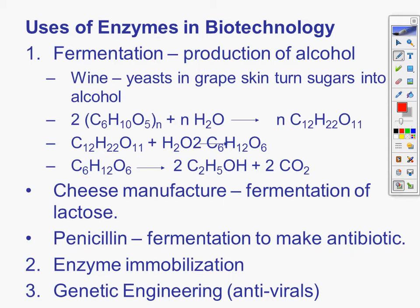Uses of enzymes and biotechnology. Fermentation. We're producing alcohol. Wine. Yeast and grape skin. Turn sugars into alcohol. There's a couple different reactions. I'm sorry, they're a little bit messed up here. It should be H2O. I apologize for that. The two should not be in there. I don't know why that's in there. Well, excuse me. The two's on the C6H12O6. So it should be yield 2 C6H12O6. Cheese manufacturing. Fermentation of lactose. Penicillin. Fermentation to make an antibiotic. Enzyme immobilization and genetic engineering. Antivirals. But that wine to yeast grapes, that's a lovely example that you love to use on AP.